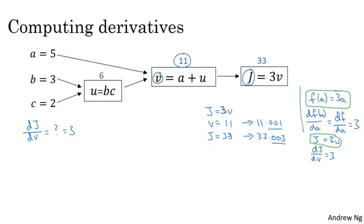So in the terminology of backpropagation, what we're seeing is that if you want to compute the derivative of this final output variable — which usually is the variable you care most about — with respect to v, then we've done one step of backpropagation, gone one step backwards in this graph. Now let's look at another example. What is dj/da?